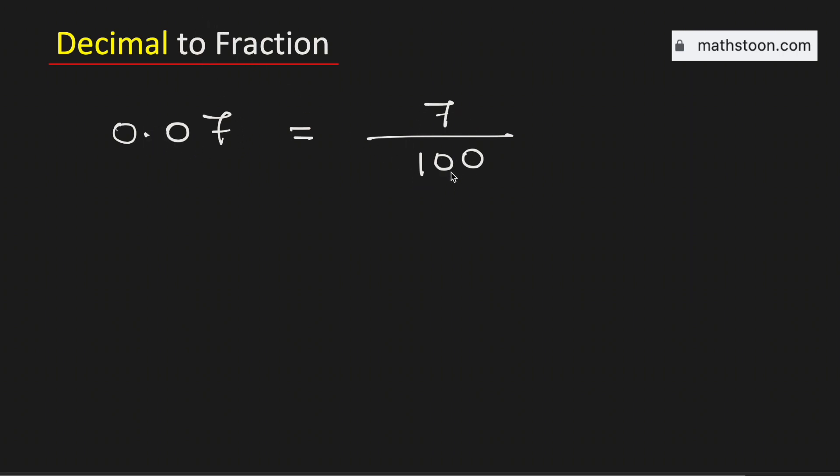Now we will simplify it. See that the only common divisor of 7 and 100 is 1, so this fraction is already simplified.